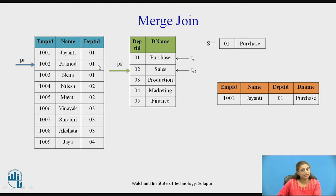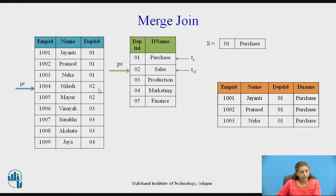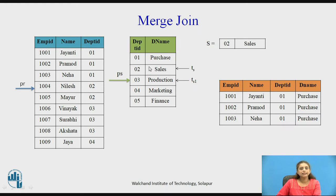The second record also has department id 1, and S has 1, so it is added to the result. Then we move to the third record — it also has the same department id, so the third record is added. The fourth record has department id 2, whereas set S has department id 1, so we fetch the next record from relation S. The first record pointed by TS is now 2. Again there is only a single record since department id is a primary key. This is then compared with the records of relation R — 02 and 02 match.